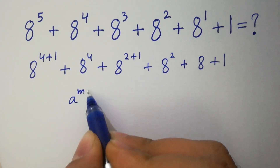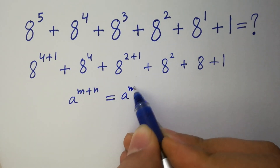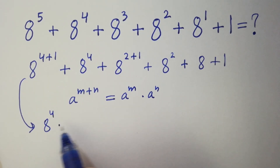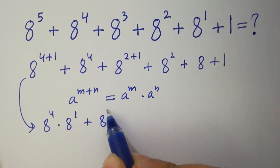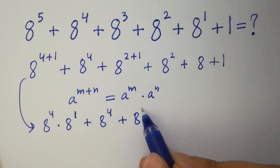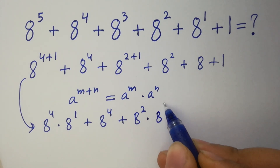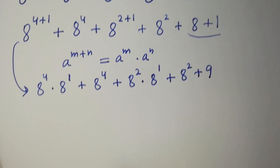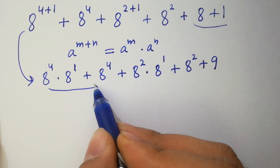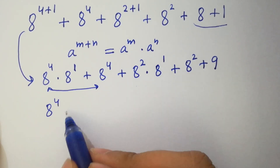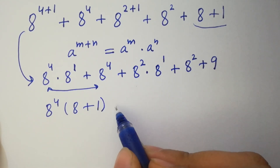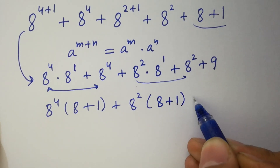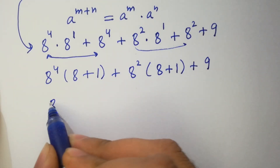Next, as we know a to the power m plus n equals a to the power m times a to the power n. Then it will be 8 to the power 4 times 8 to the power 1, plus 8 to the power 4, plus 8 to the power 2 times 8 to the power 1, plus 8 squared, plus 8 plus 1, which equals 9. Next, 8 to the power 4 can be factored out: 8 to the power 4 times (8 plus 1), plus 8 to the power 4, gives us (8 plus 1) plus 9.